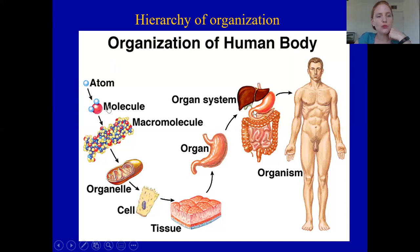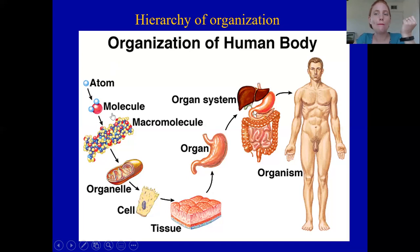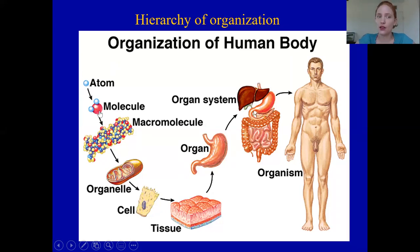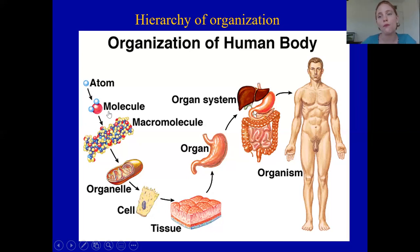Next we have a molecule. A molecule is two or more atoms bound together. For example, if you take two hydrogen atoms and bind them to one oxygen — H2O — what do you have? You now have water. So water is an example of a molecule because it incorporates two or more atoms.